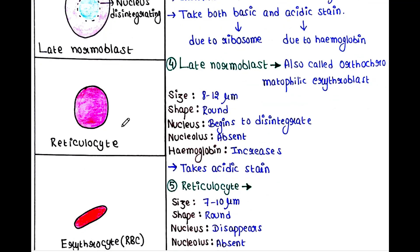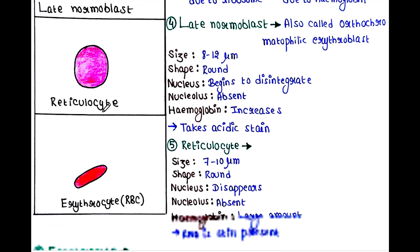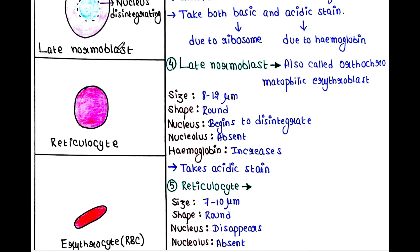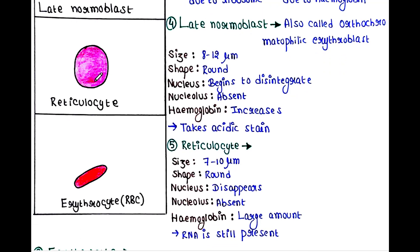Next is the reticulocyte. Size: 7 to 10 micrometers, a little bit smaller than the late normoblast. Shape: round. Nucleus: disappears. Nucleolus: absent. Hemoglobin: large amount. And RNA is still present in this cell.